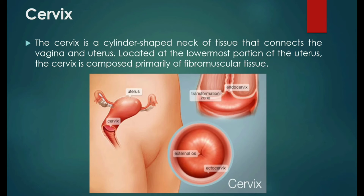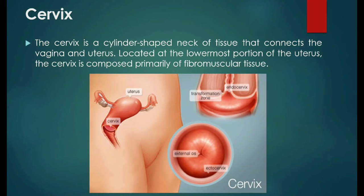An opening in the center of the ectocervix, known as the external OS, opens to allow passage between the uterus and vagina. The endocervix or endocervical canal is a tunnel through the cervix from the external OS into the uterus. The overlapping border between the endocervix and ectocervix is called the transformation zone. The cervix produces cervical mucus that changes in consistency during the menstrual cycle to prevent or promote pregnancy.